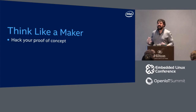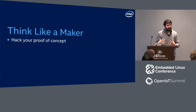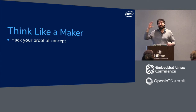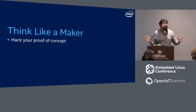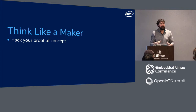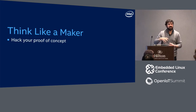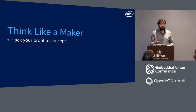One thing I like to say is: hack your proof of concept. When you start a proof of concept for a new product or addition, the first thing you should do is hack something together — not document, have meetings, theorize, and research first. Just like programming, hardware is the same. Once you hack something together and make some mistakes, you'll see things you didn't see before. Whether you're in big corporations or smaller companies, there are lots of ways to do this.